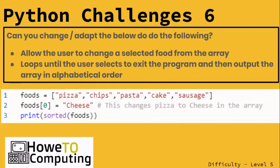See if you can change and adapt the below code so it allows users to select a food from the array, loop until the user selects to exit, and then output everything in alphabetical order. Some key things to consider there: exiting, changing a selected food, and then outputting in alphabetical order.